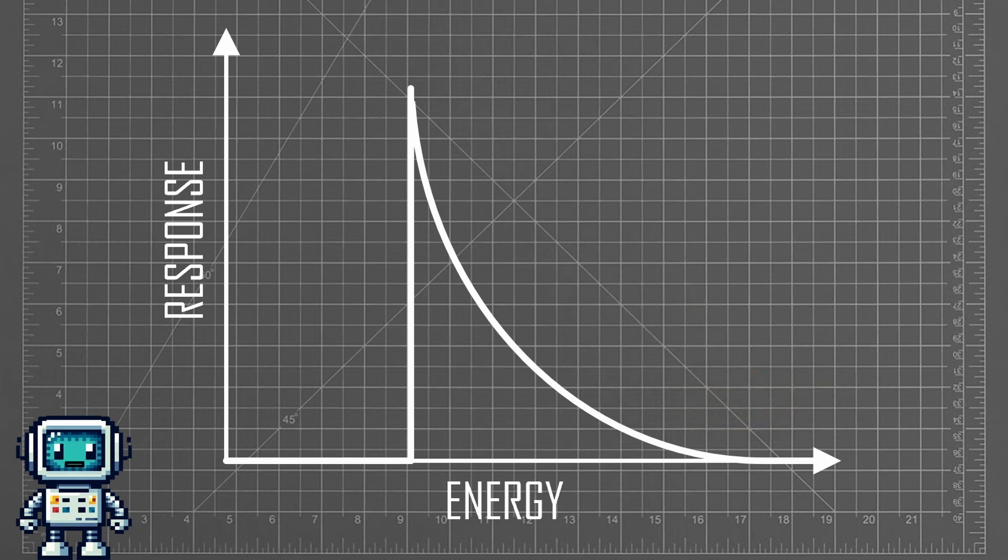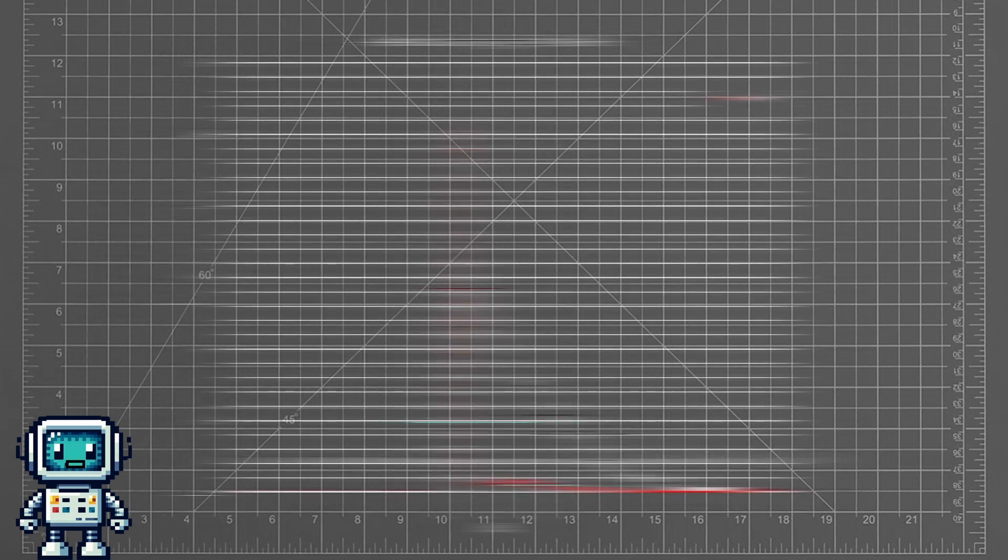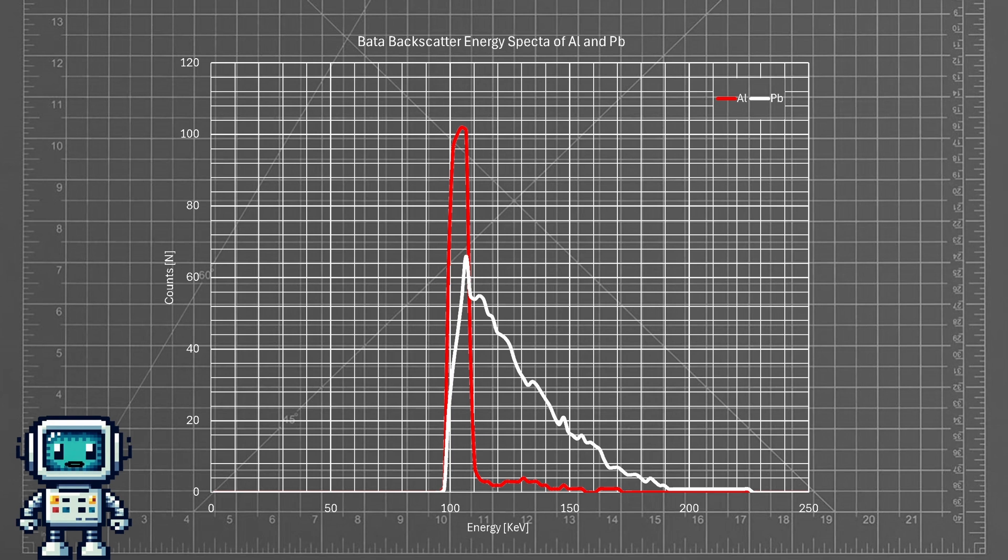This is made worse because it is only a very thin layer of silicon that is able to detect these particles. In this energy plot, the red curve is the back-scattered energy of the aluminium sample, and the white one is from the lead sample. Whilst the peak count for the aluminium is higher, the overall count seen by the detector is about two and a half times higher for the back-scattered particles from the lead sample.